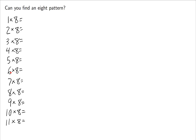Let's see if we can find a pattern with 8. We're going to go through and multiply a few numbers by 8 and look for a pattern. 1 times 8 is 8. 2 times 8 is 16. Now remember the pattern we had with nines — adding up the digits. So 1 plus 6 is 7.